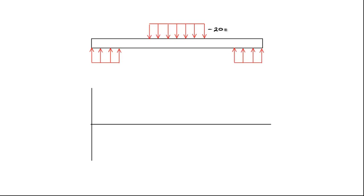Here's that more realistic example. I've got a force of negative 200 pounds distributed across the center of the beam acting downward, and by symmetry that needs to be supported by a 100-pound force on the left and another 100-pound force on the right. The graph we're trying to generate is the shear force, v, as a function of x, where x is the distance from the left side of the beam.